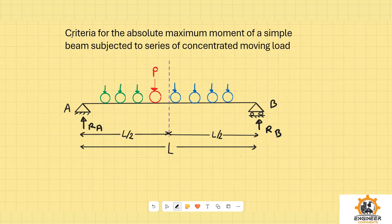If you see this problem with wheel load, that is the criteria for the absolute maximum moment of a simple beam subjected to a series of concentrated moving loads. If you see this beam, the length is L, then you can define it at the mid section. This is L/2 distance on each side.